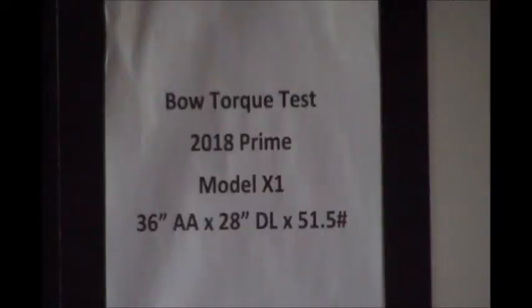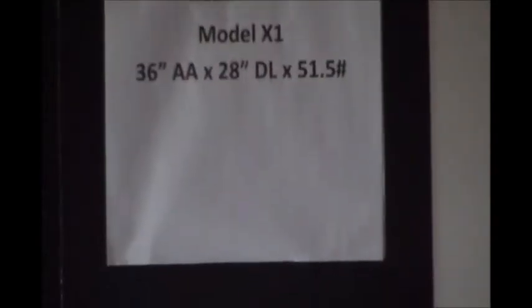This is Joe Marzullo with another Bow Torque Test. Today it's a 2018 Prime Model X1, 36 inches axle-axle, 28 inch draw length, and this is a 50 pound peak bow set to max which is 51.5.